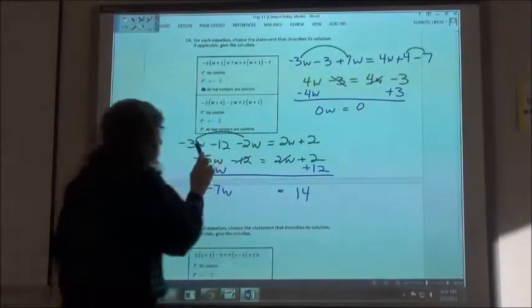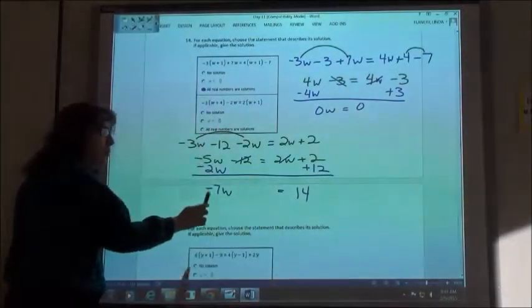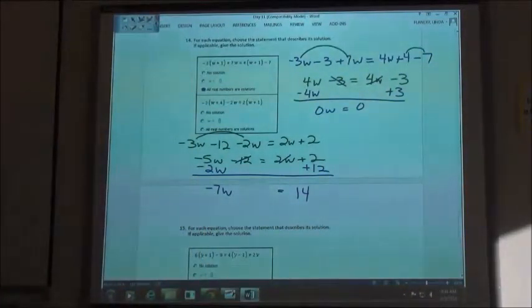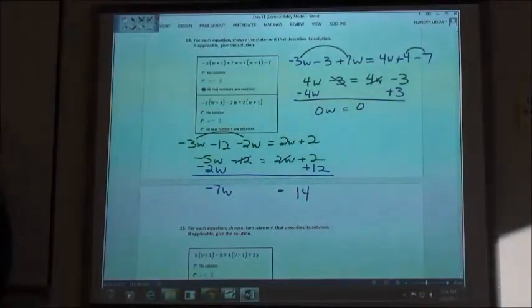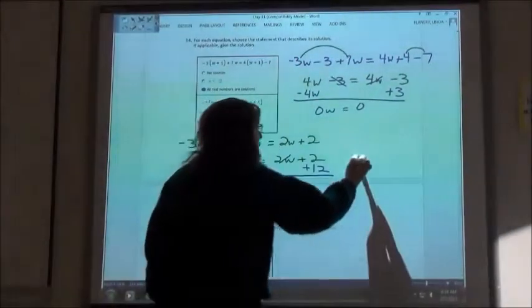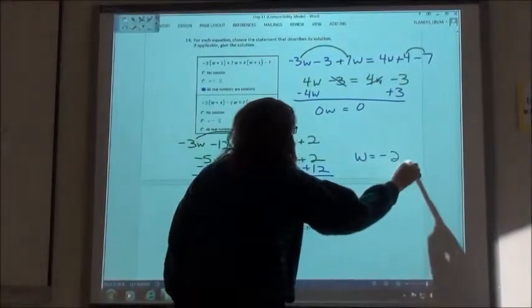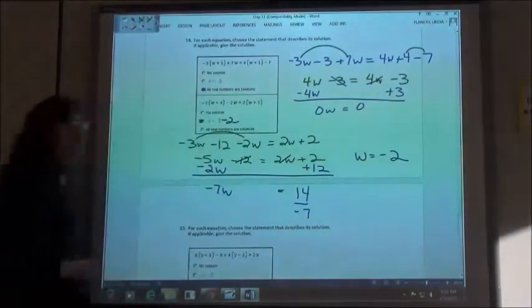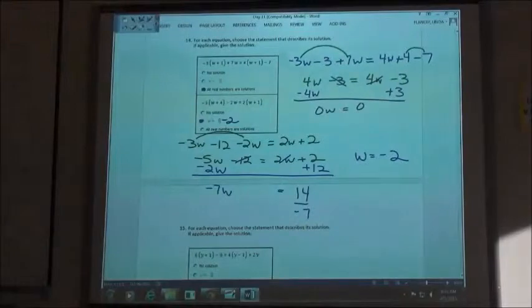Oh okay. When you did negative 5 minus 2, you got negative 7, right? Oh yeah. So that's a negative 7w equals your 14 on the other side, right? Yep. So now we're going to divide and our answer is going to be w is equal to negative 2.